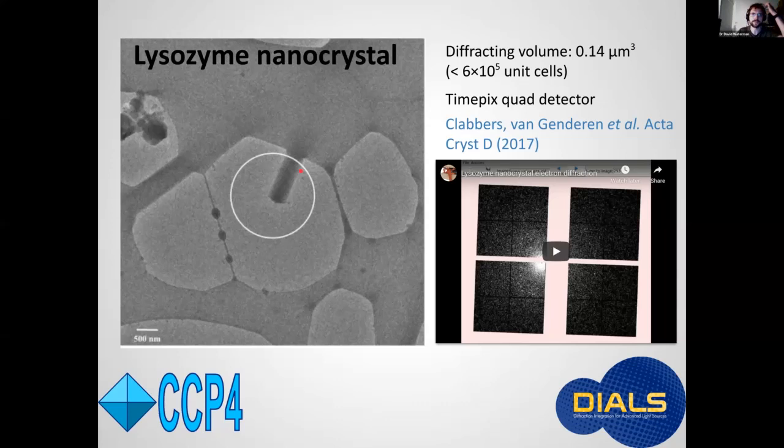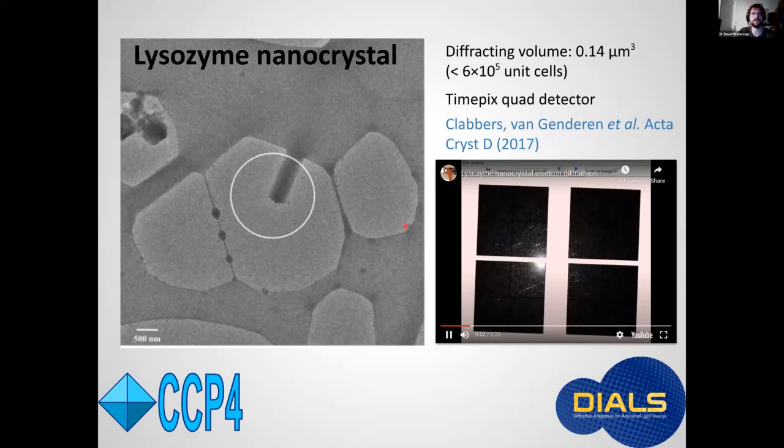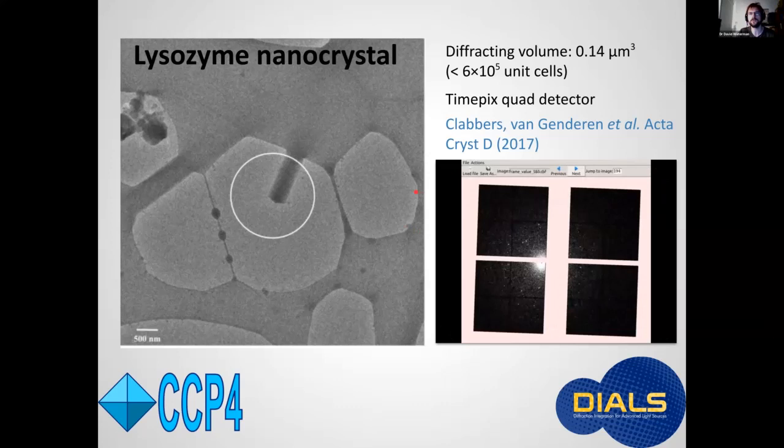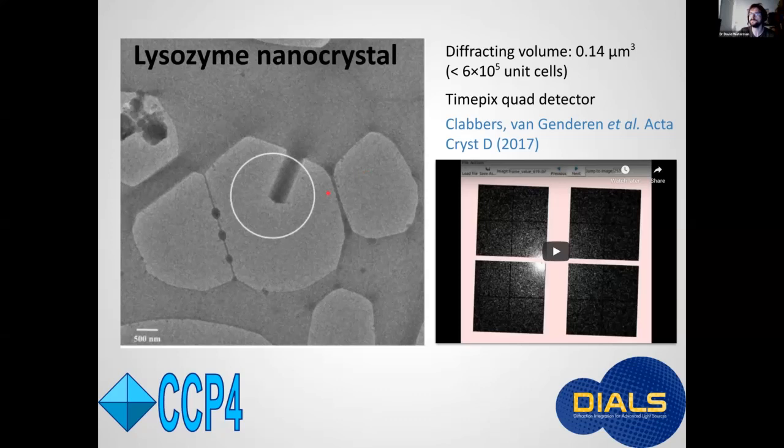We took that data set and others from similar crystals to develop enhancements to dials for electron diffraction processing. Here's a video of the diffraction patterns from that data set shown in the dials image viewer. One thing you can see is that this detector is an unusual quad of timepix modules with large gaps between them. That's not an ideal arrangement, clearly, but timepix does allow fine slice data collection with electron counting free from readout noise.